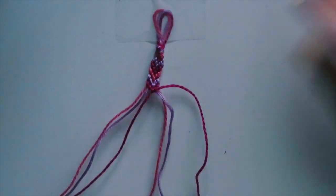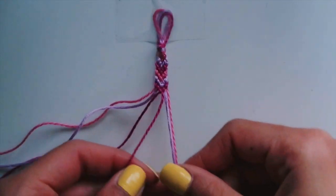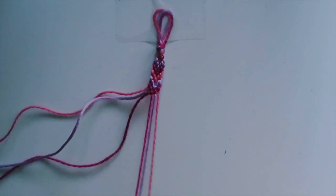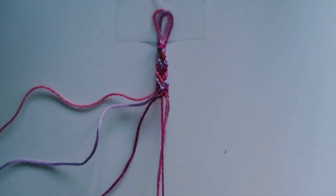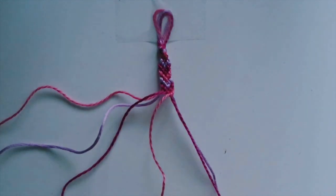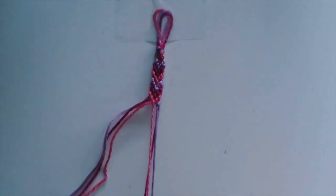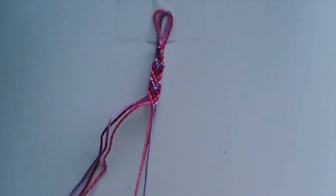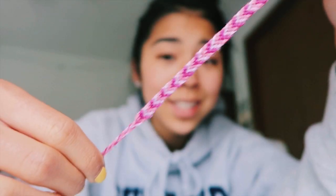So you can start to see the chevron pattern kind of forming here. This pattern usually takes about the same amount of time as the diagonal one does. It takes a little bit more brain power, I guess, because you kind of have to think about switching. And once you get the hang of doing this, it really isn't that bad and it's kind of mindless. This is what this one looks like. Look how adorable that is. I really like the chevron pattern. It's one of my faves.